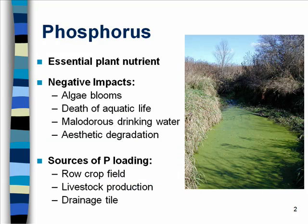I think everyone knows that phosphorus is an essential plant nutrient and we use a lot of phosphorus in Iowa to increase yield. But excessive phosphorus that goes to the water has a negative impact — you can see algae blooms and the death of aquatic life. Eventually we have bad drinking water and it also destroys the aesthetic landscape.